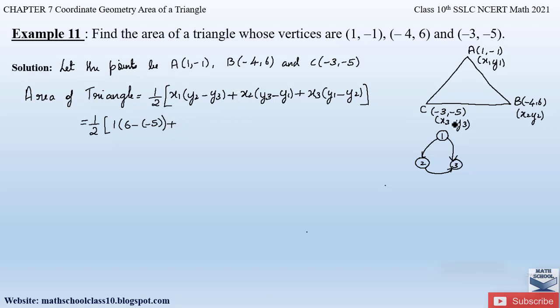Then we have plus x₂. x₂ value is -4, into (y₃ - y₁), that is -5 - (-1). Plus again, x₃ is -3 into (y₁ - y₂), which is -1 minus 6.